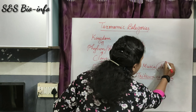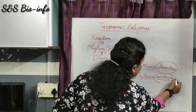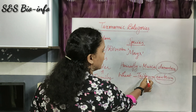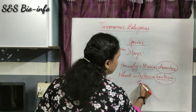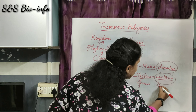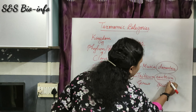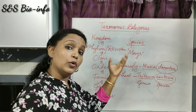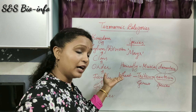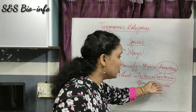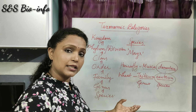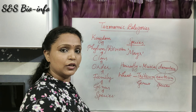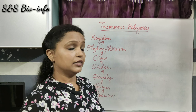Here the words 'domestica' and 'aestivum' represent the species name, while the first words 'Musca' and 'Triticum' are the genus names. The species domestica comprises closely related individuals of the housefly, and the species aestivum comprises closely related individuals within that particular species.